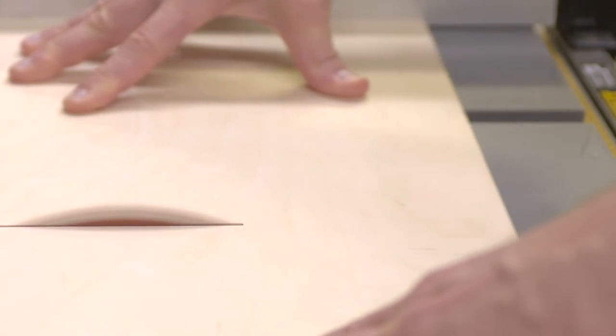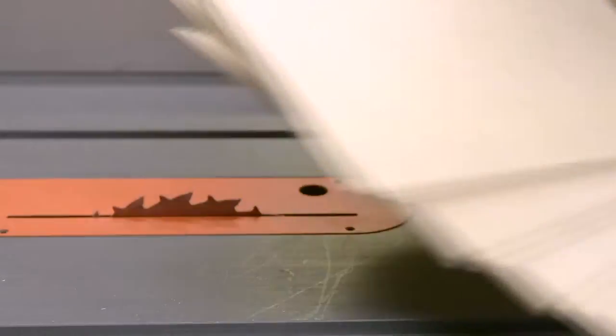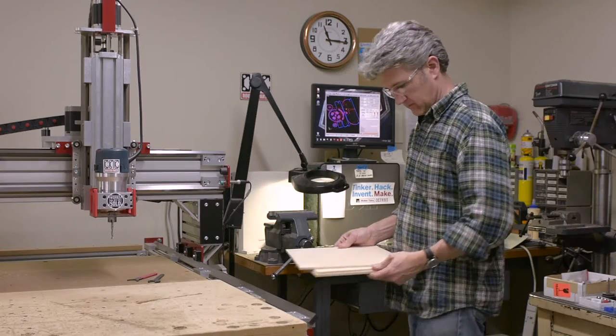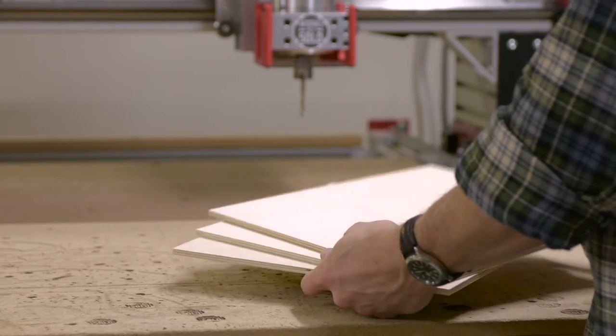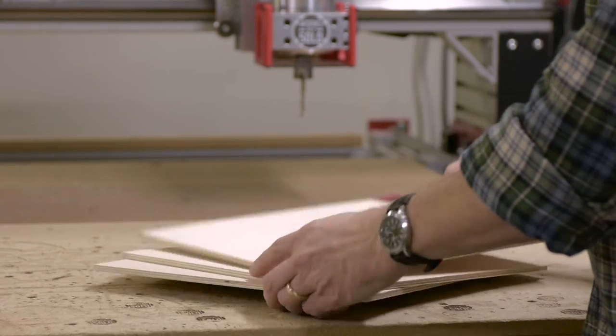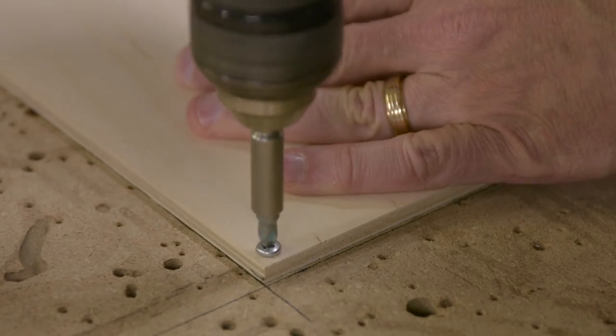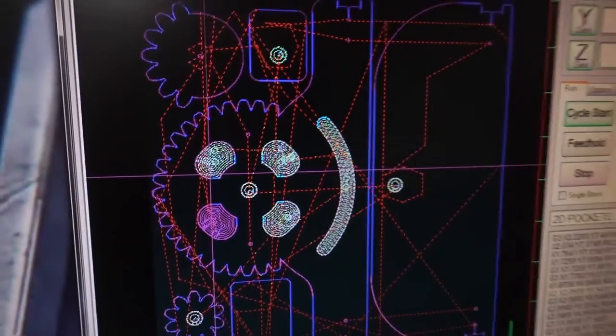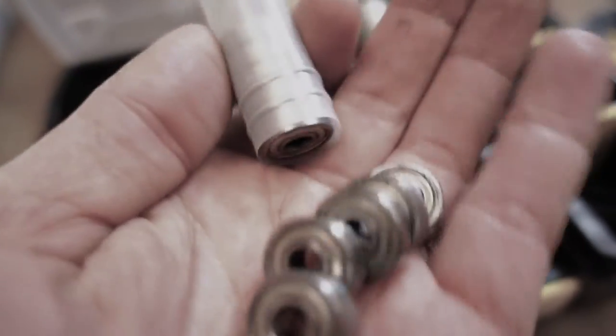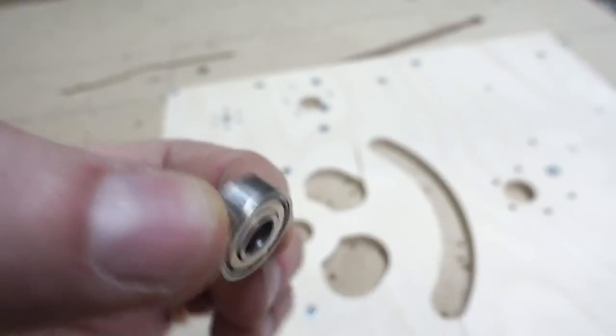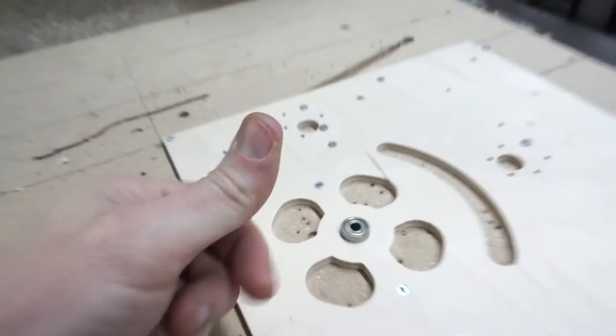I cut the plywood to 300 by 300 millimeter squares. As you'll see, I went through quite a bit of this plywood.